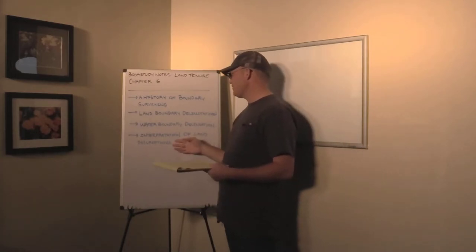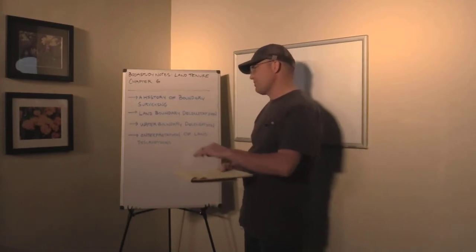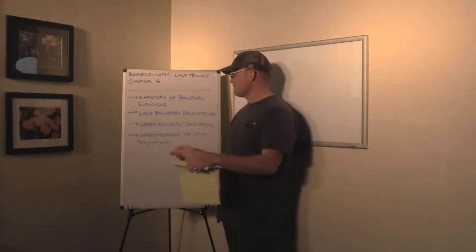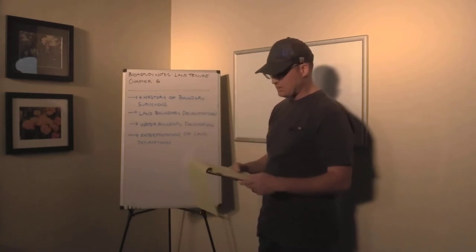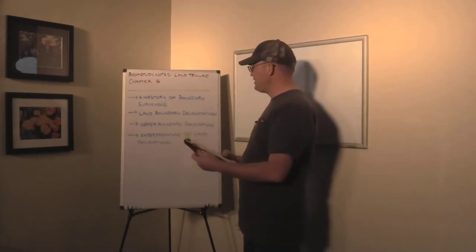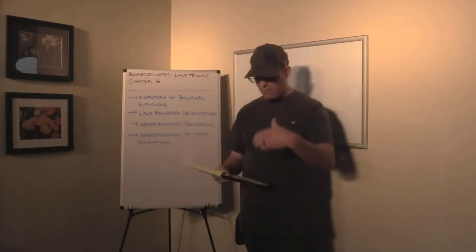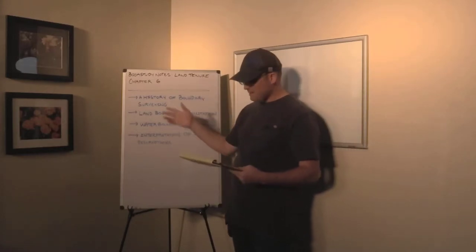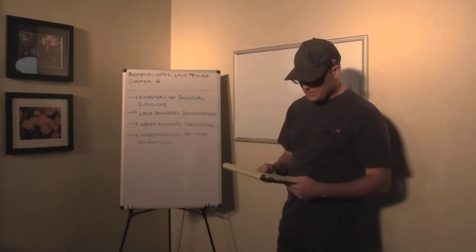The last section is on the interpretation of land descriptions. Some surveyors call them legal descriptions. I actually like the term land descriptions a little better. So those are the four main sections of the chapter. I want to go through my notes now and follow the same basic order, but highlight some different stuff.